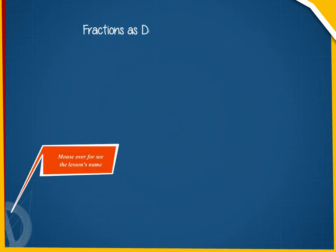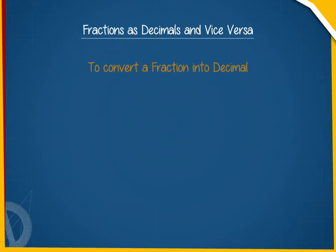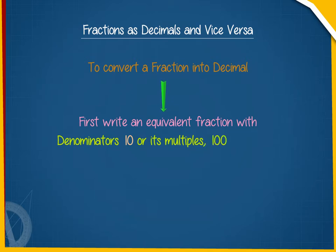Fractions as decimals and vice versa. To convert a fraction into a decimal, we first write an equivalent fraction with denominator 10 or its multiples: 100, 1000, etc.